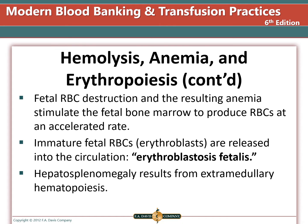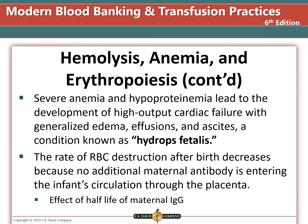Fetal red cell destruction and the resulting anemia stimulates the fetal bone marrow to produce red blood cells at an accelerated rate. The immature fetal blood cells, or erythroblasts, are released into the circulation — a condition called erythroblastosis fetalis. Hepatosplenomegaly may result from extramedullary hematopoiesis. Severe anemia and hypoalbuminemia lead to high-output cardiac failure with generalized edema, effusions, and ascites — a condition known as hydrops fetalis.